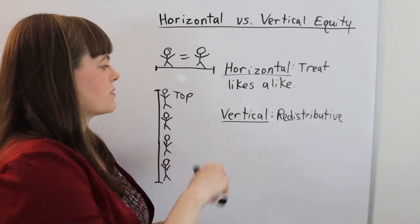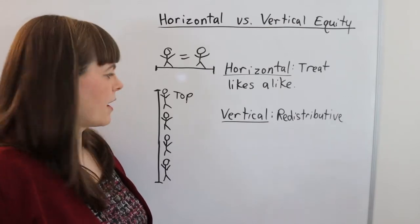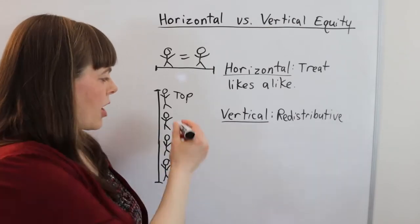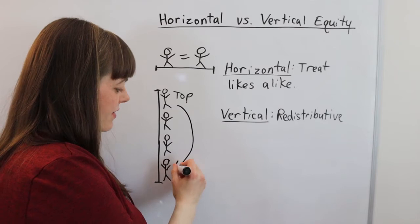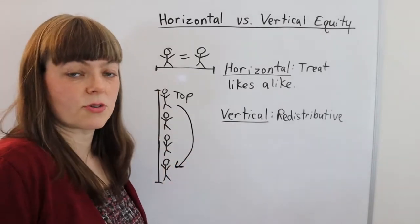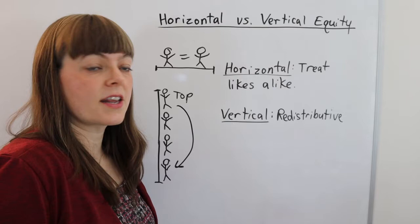Whereas vertical equity is really about redistributive equity. It's about taking money from people at the top and giving it to people at the bottom to squish the distribution and reduce inequality.